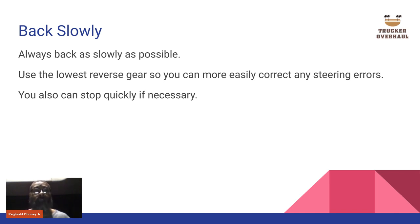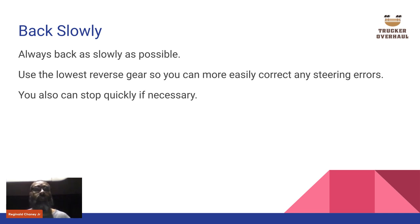Back slowly — when backing slowly you can hear if you're about to hit something. You can feel the pressure of a pole because it won't let you go further. If you back up fast you'll just run right over it. Always back as slowly as possible and use the lowest reverse gear so you can more easily correct any steering errors.